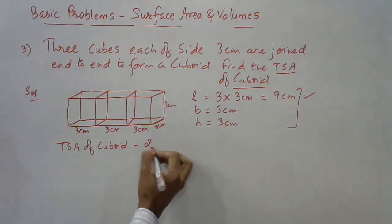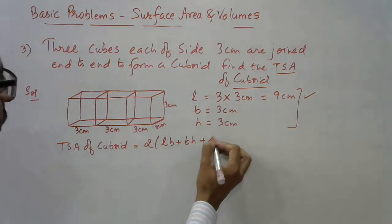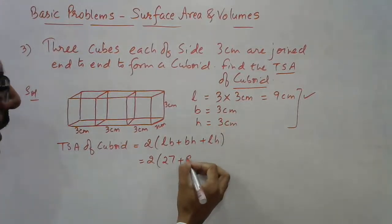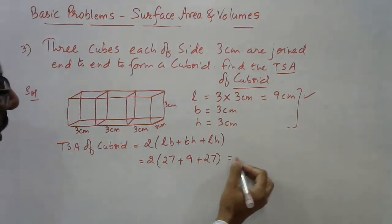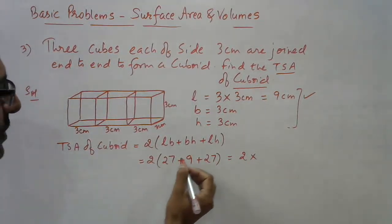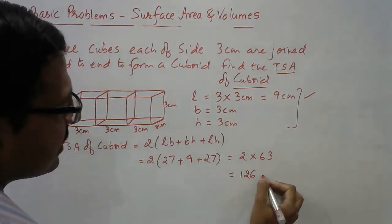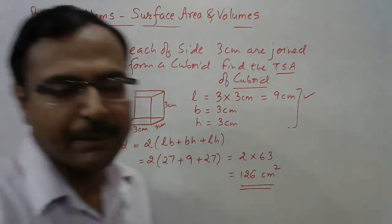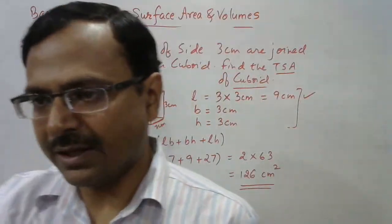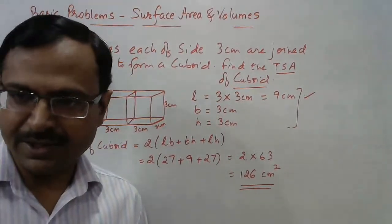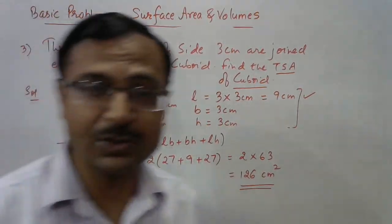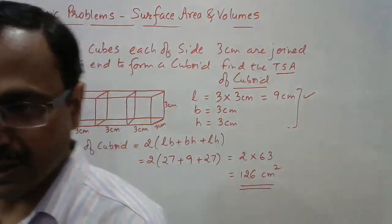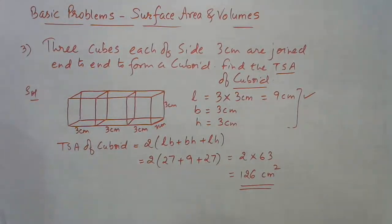TSA of cuboid = 2(LB + BH + LH). Substituting: L = 9, B = 3, H = 3. LB = 9 × 3 = 27; BH = 3 × 3 = 9; LH = 9 × 3 = 27. Sum = 27 + 9 + 27 = 63. TSA = 2 × 63 = 126 cm². Since we calculated area, the unit is cm². Remember to always write the unit with the answer — that is very important. The answer is 126 cm².